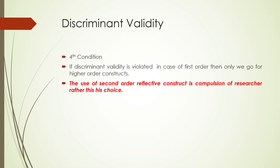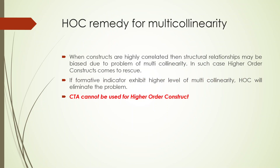We go for higher-order models when discriminant validity is violated — whether we talk about the Fornell-Larcker criterion or the HTMT ratio. If these are violated, we have to go for higher-order models. Remember, the use of a second-order reflective construct is more a compulsion than a choice for the researcher, because you have run the basic model and found that VIF was overshooting, causing validity failure.